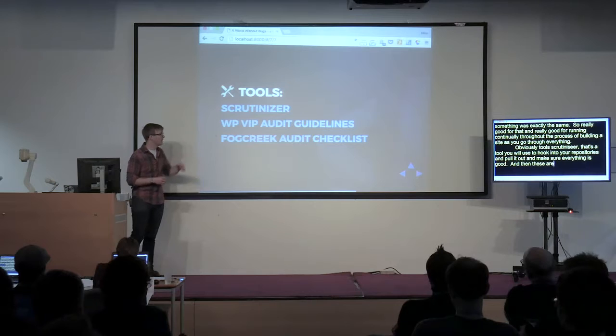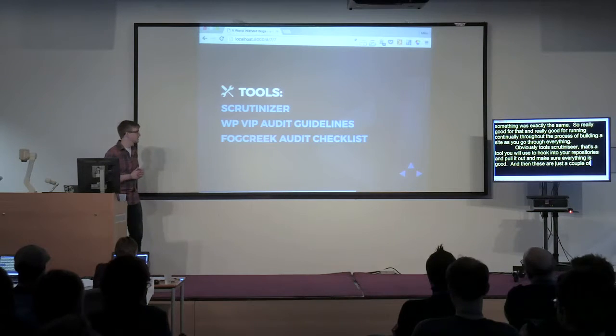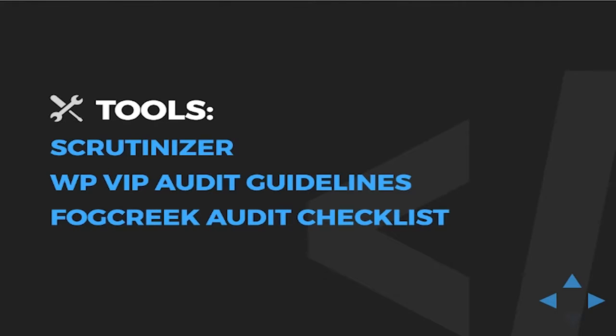For tools: Scrutinizer hooks into your repositories and makes sure everything is good. And then these are just a couple of guidelines and checklists. VIP, for example, checks every line of code committed onto their servers because it's a big multi-site install — they don't want anything going wrong, so they have a really good guidelines and checklist. And Fog Creek runs bug tracking software, so they have a really great checklist as well.